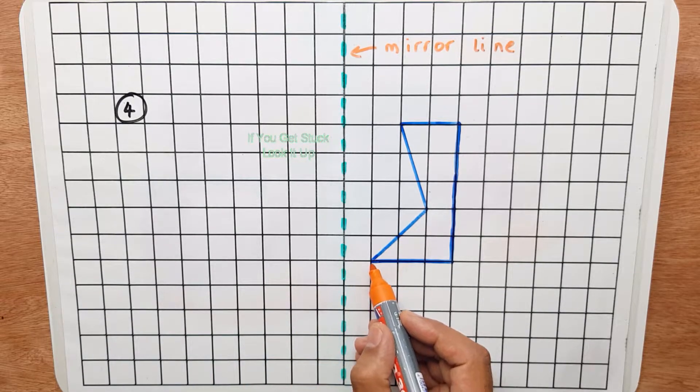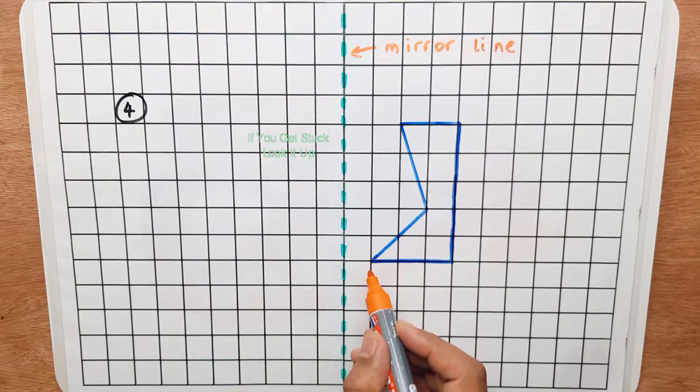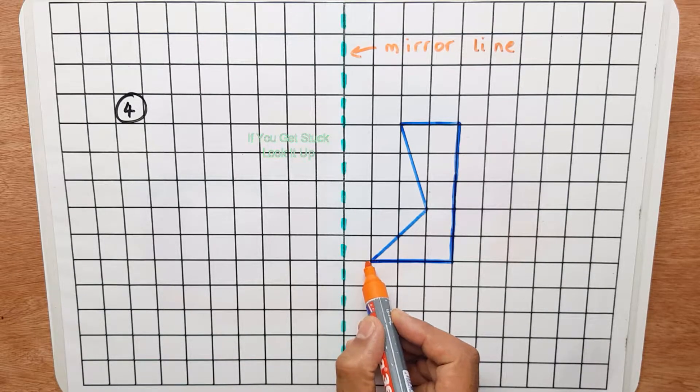What we need to do is start at this corner or this vertex and count how many squares it is to the mirror line.